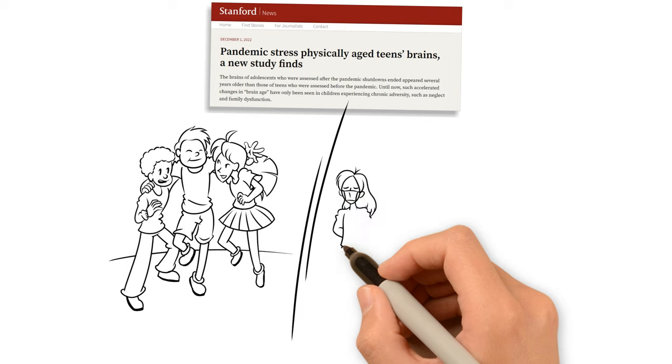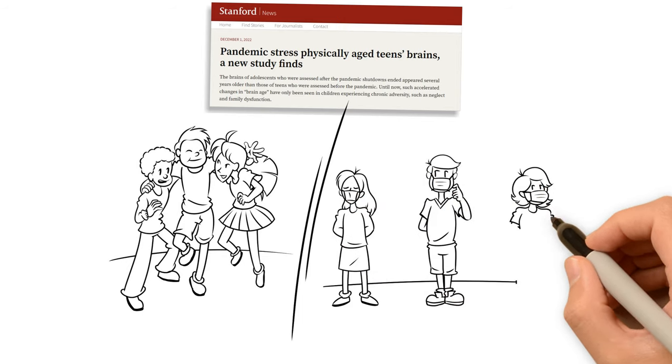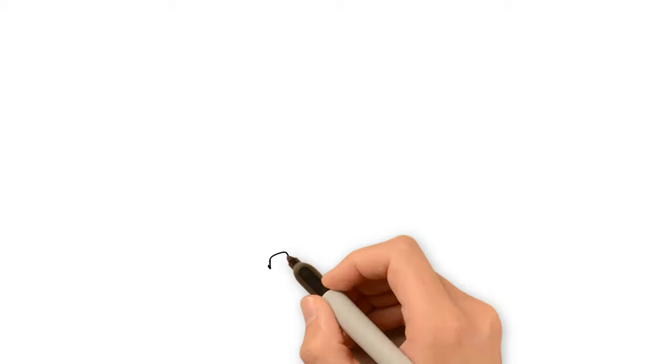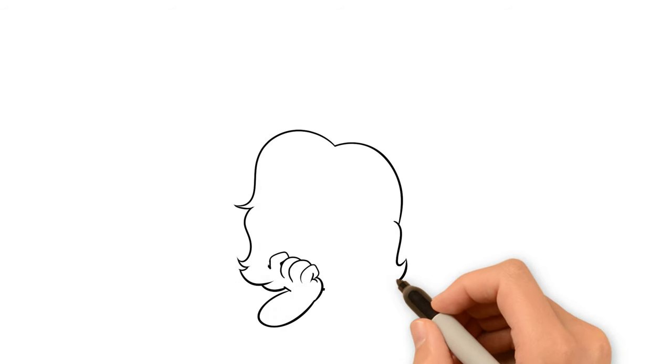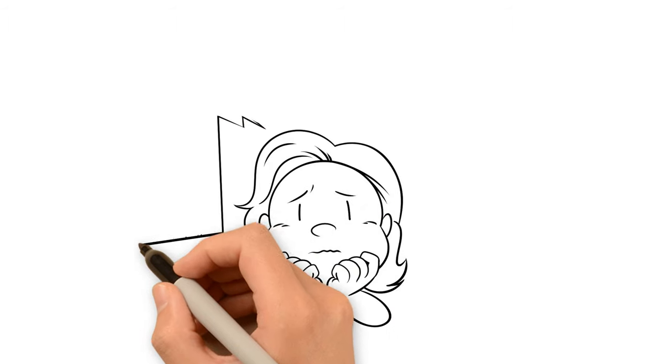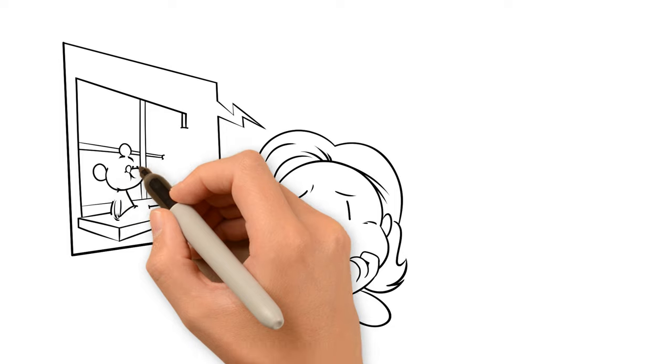Teenagers scanned after the pandemic showed reduced cortical thickness, larger hippocampal and amygdala volume, and greater brain aging than those scanned before COVID. This kind of adolescent brain development, the study noted, is typically associated with exposure to early life adversity, including violence, neglect, and family dysfunction.